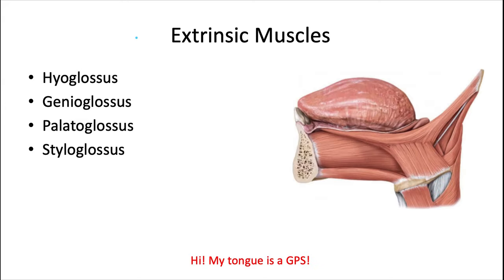The extrinsic muscles are the hyoglossus, genioglossus, palatoglossus, and the styloglossus. A way to remember those four names is the phrase 'Hi, my tongue is a GPS,' where 'hi' helps remember hyoglossus, and GPS stands for the first letter of each of the other three names.